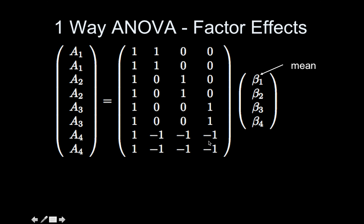If you don't have balanced data, start with this structure and then mean center — we'll cover that another time. Now, what do betas two, three, and four mean? It's easier to instead focus on the separate group means. Remember the trick I showed you before, where you can get the contrast for each group directly off your design matrix.